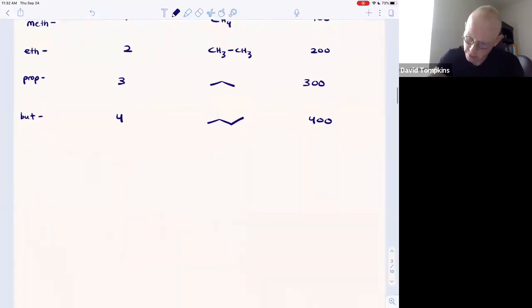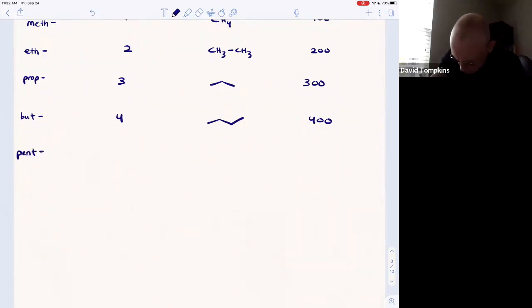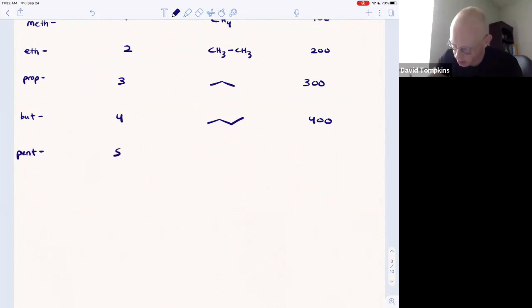These are a little harder to remember, the first four, but after this it sort of makes sense. Pent is obviously five carbons long. So pentane has this structure and it has a Kovats index of 500.